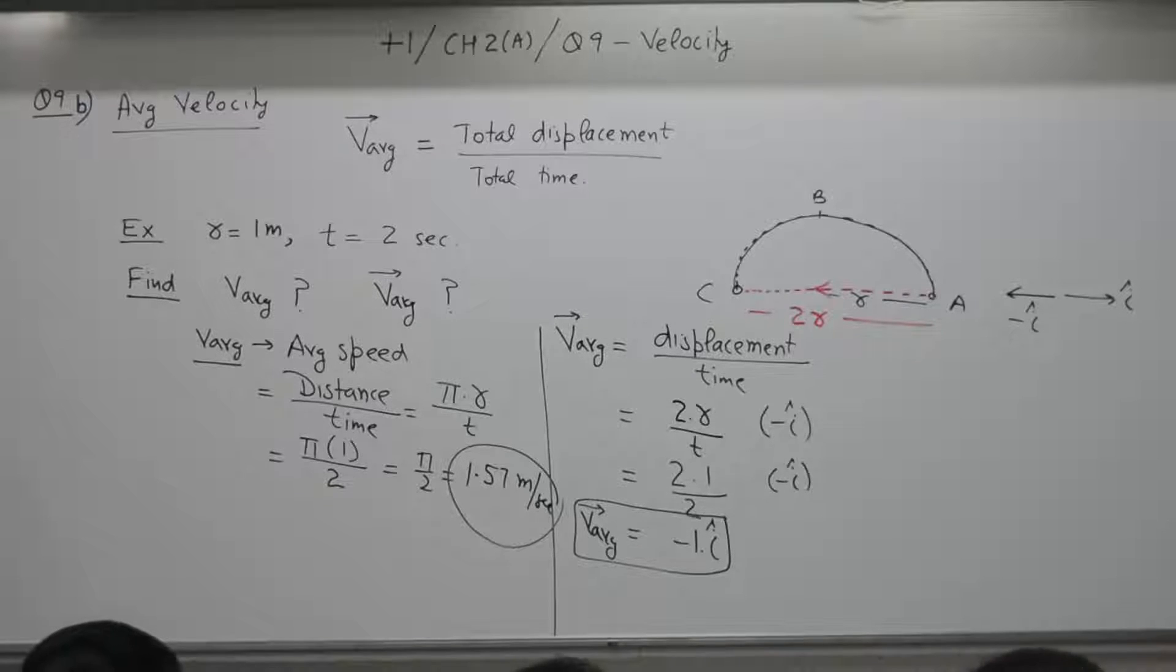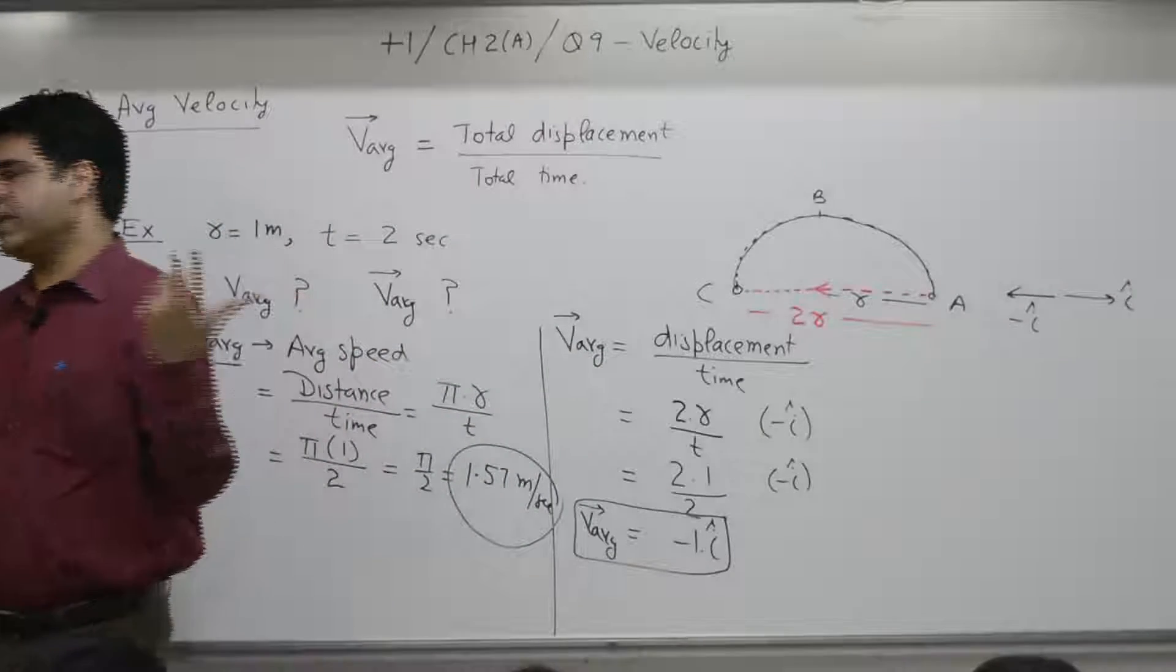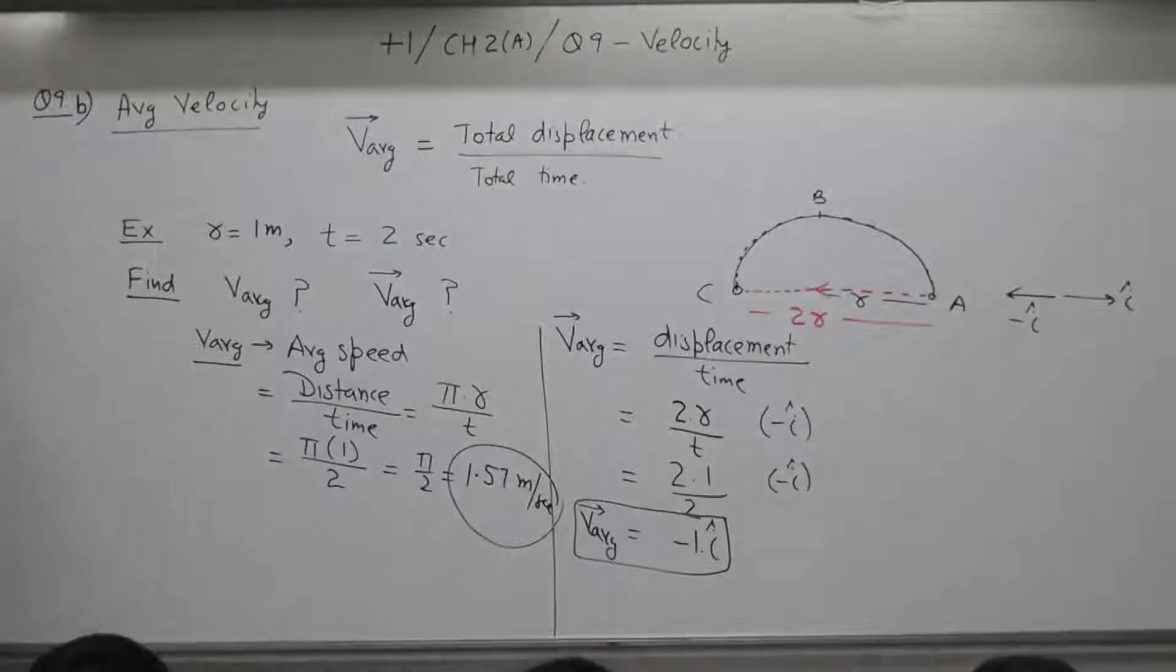In the notes, we have written only the magnitude of an average velocity. Any of the vector quantity, we need to specify both magnitude as well as direction. 1 minute to complete.